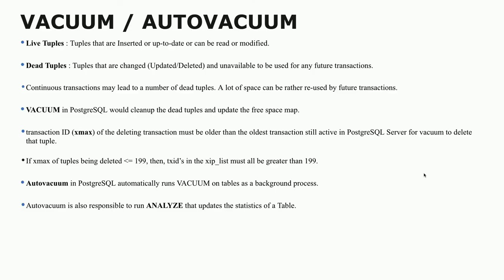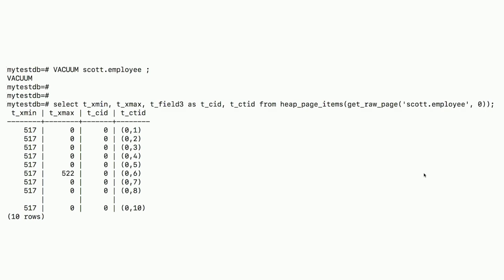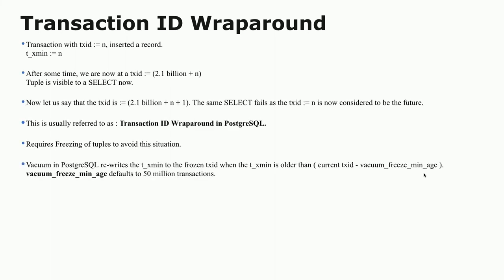Auto-vacuum automatically picks up which tables need to be vacuumed. There is an auto-vacuum launcher process. After running vacuum on scott.employee, the tuple in line item 0,9 is gone. But it doesn't mean that space is gone — if you check free space after vacuum, it increased to 95% from 94% because one record was deleted. That space can be reused by another tuple in the future.